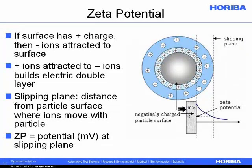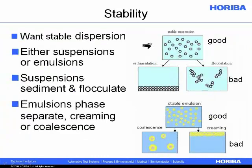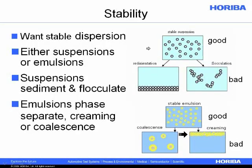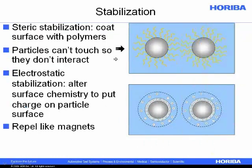The zeta potential is very interesting when dealing with submicron dispersions or emulsions and can be used by people in the cosmetics industry to do formulation of new products. Usually what we're trying to do — whether with a dispersion of small particles or an emulsion — is create a stable dispersion. If we don't have a stable dispersion with solid particles, they might sediment or flocculate. For an oil and water emulsion, we want a stable emulsion, which usually involves small droplets, and what we're trying to avoid is coalescence or phase separation due to creaming.